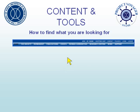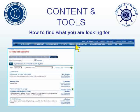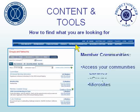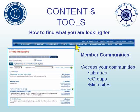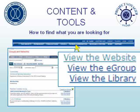Member Communities is the main hub for all the new tools on Snami.org. All sections, committees, and panels have communities established for them. Clicking on Member Communities shows all your communities. The names of the communities are on the left, while links to each established microsite, eGroup, and library are on the right.